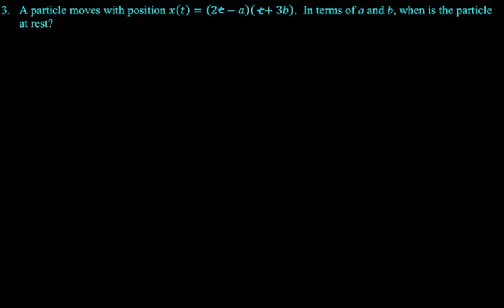All right, next up. A particle moves with position x of t equals, you can maybe notice if you're paying close attention that I had a typo there that I tried to fix. x of t equals 2t minus a times t plus 3b. In terms of a and b, when is the particle at rest? All right, we're at rest when velocity is 0, so we need to find velocity. We need to connect velocity to position.